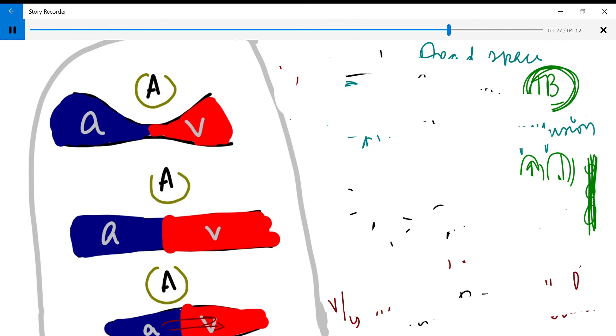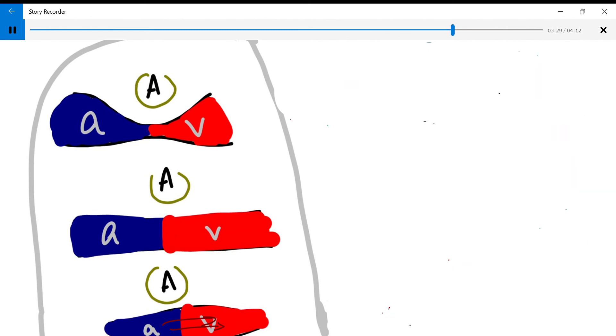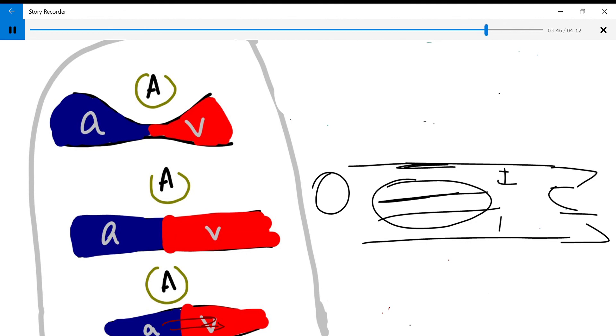When you make a person supine, they're lying down like this with the head here and legs here. Zone 1 is going to be towards the anterior chest wall and zone 3 is going to be towards the posterior chest wall.